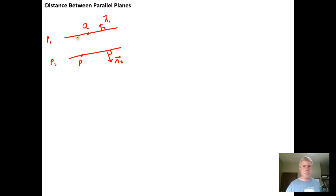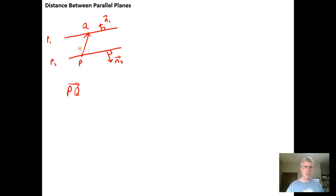This really is just the same as finding the distance between a point and a plane, like we did in the previous video. So what I can do is find any point in this plane and any point in this plane, make the vector from P to Q, and then — since I have normal vectors — pick either one of them. Maybe pick the smallest one just because it's convenient. Then find the projection of PQ onto that normal vector.